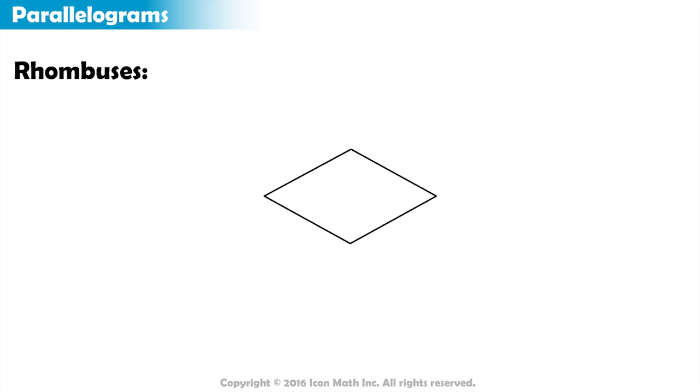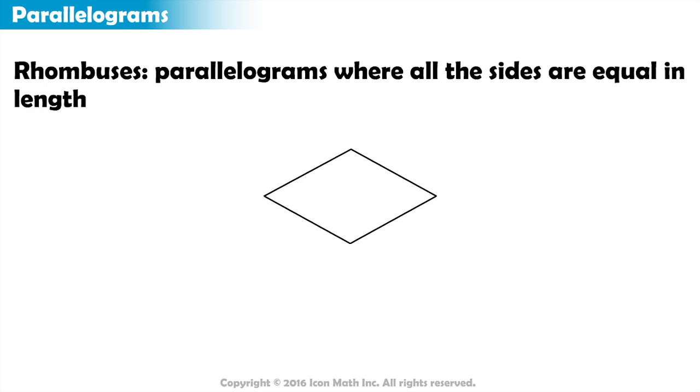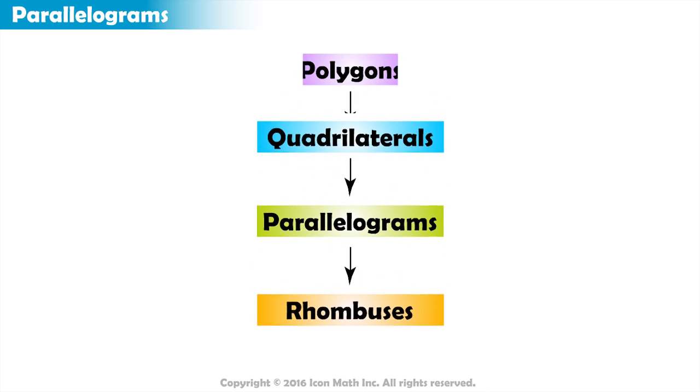Rhombuses are also special types of parallelograms, where all of their sides are equal in length, and they satisfy all the features of parallelograms, quadrilaterals, and polygons.